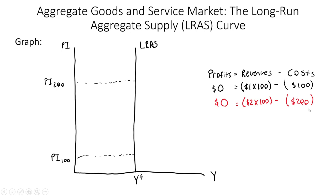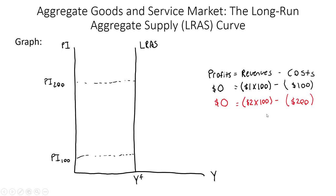In the long run, costs can change. In the short run, they're usually held down by contract, so they stay low while revenues increase — which is why in the short run a firm is willing to produce more as the price index goes up. But in the long run, it won't affect their profits at all.